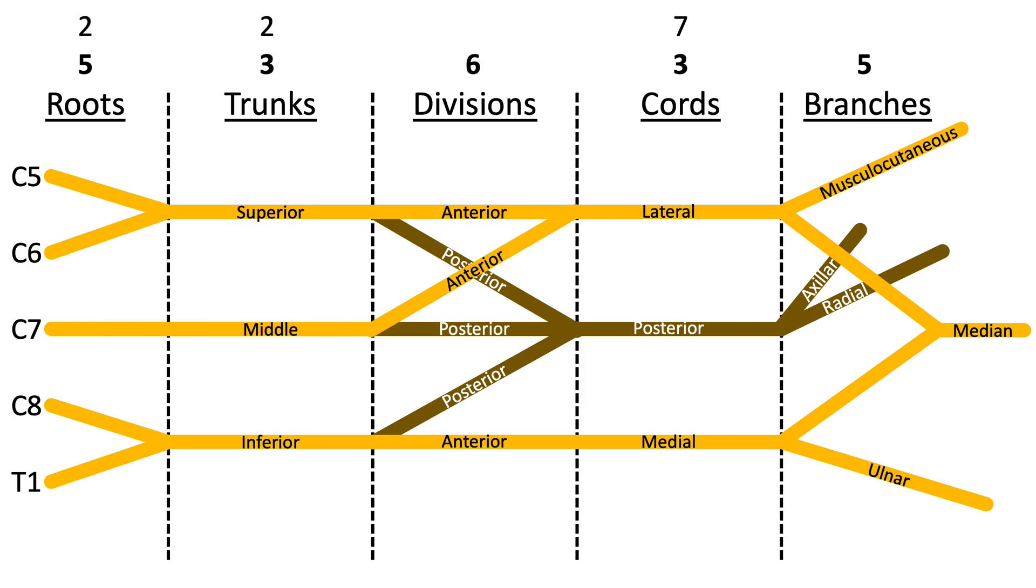Note that these come from the roots, trunks, and the cords. For the two collateral branches from the roots, these include from the C5 root the dorsal scapular nerve, and from the C5, C6, and C7 roots the long thoracic nerve.